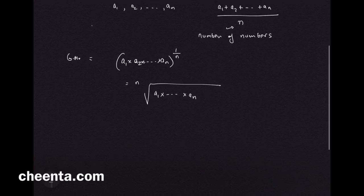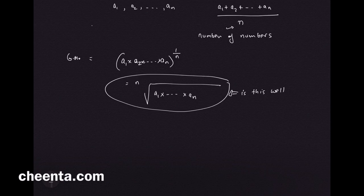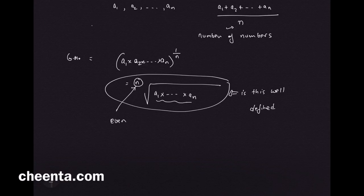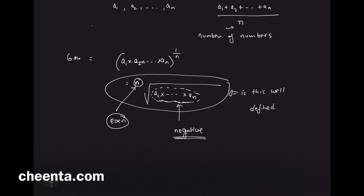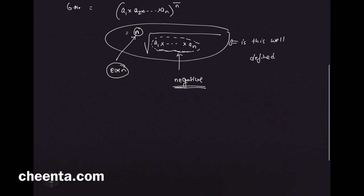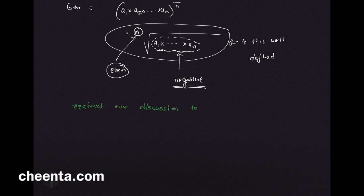Now the question is, is this well defined? You can readily see the problem. If n is even and some of these numbers is negative, then there is a possibility that the product of these numbers is also negative. If an odd number of numbers are negative, then certainly the product will be negative. If n is even, then you cannot really take the nth root and get a real number. So we restrict our discussion to positive numbers only.